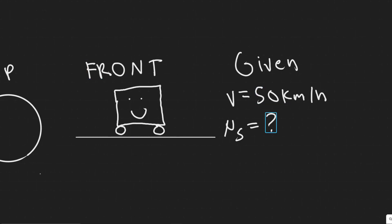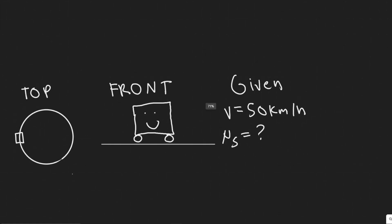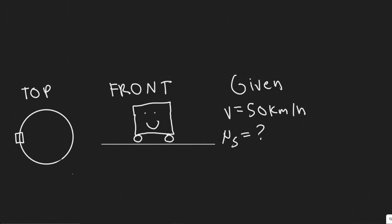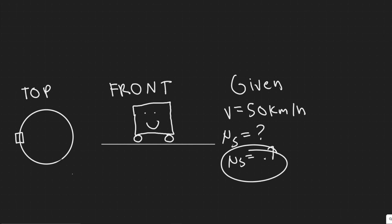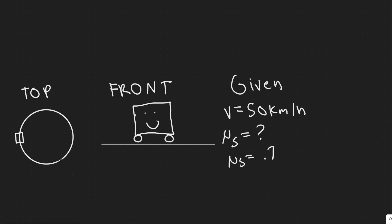In order to do this problem, we're going to need the coefficient of static friction. They don't give us the value but they tell us to use table 5-1, and that value is 0.7. The reason we're using μ_s — static friction and not kinetic friction — is because we're looking at the point where it doesn't slide. If it was sliding, we'd use kinetic. For highways, we're using rubber on wet concrete, which is where we get this value.